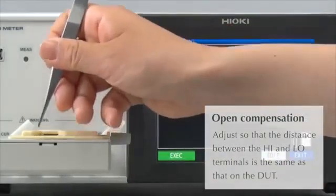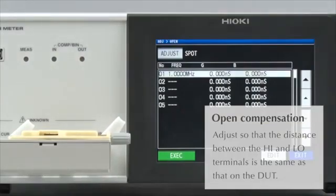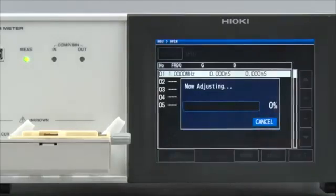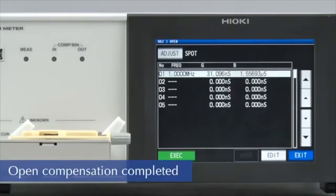By doing this, you will be conducting open compensation with the electrodes spaced at exactly the same distance as that on the DUT. This completes open compensation at 1 MHz.